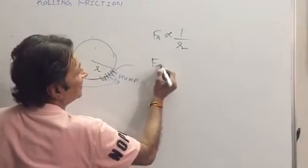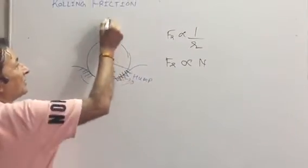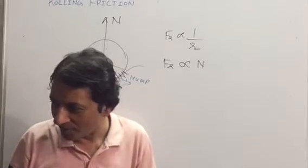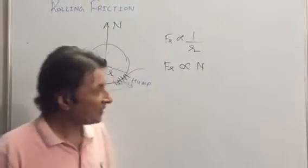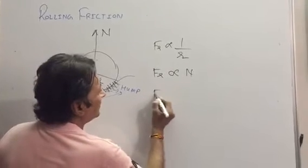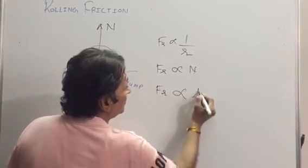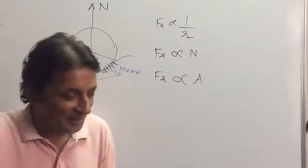Rolling friction is directly proportional to the normal reaction. So if the weight is heavier, the rolling friction is more. Rolling friction is proportional to the area of the wheel in contact.